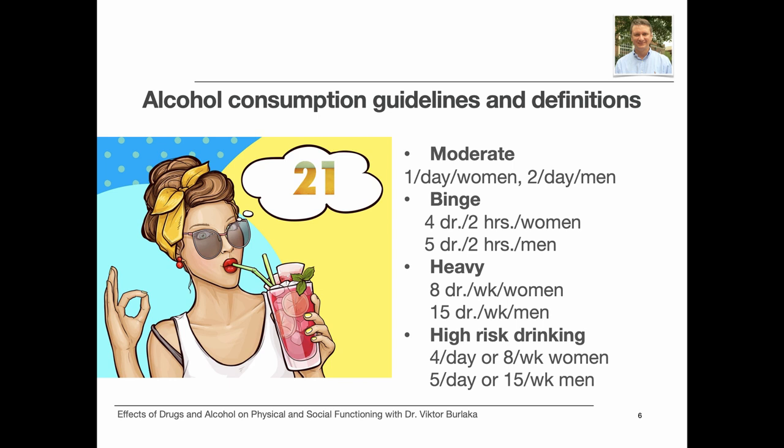Binge drinking, or heavy episodic drinking, is consuming four or more drinks within about two hours by women, and five or more drinks in two hours by men. Heavy drinking is defined as eight or more drinks per week for women, and 15 or more drinks per week for men. High risk drinking is defined for women as four or more drinks on any day, which is binge drinking, or eight or more drinks per week, which is heavy drinking.